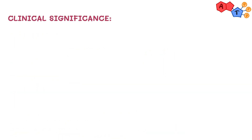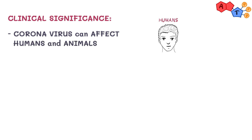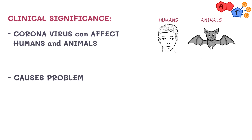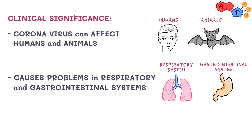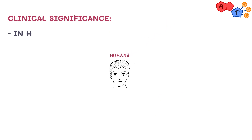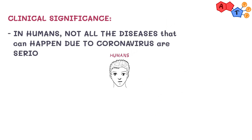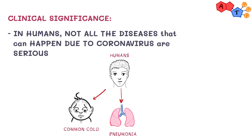For clinical significance, coronavirus can affect both humans and animals, causing problems mainly in the respiratory and GI systems. Many coronavirus strains that cause disease have been discovered. In humans, not all diseases caused by coronavirus are serious. It can cause common cold, pneumonia, or more severe conditions such as severe acute respiratory syndrome (SARS), Middle East respiratory syndrome (MERS), and coronavirus disease 2019, known as COVID-19.